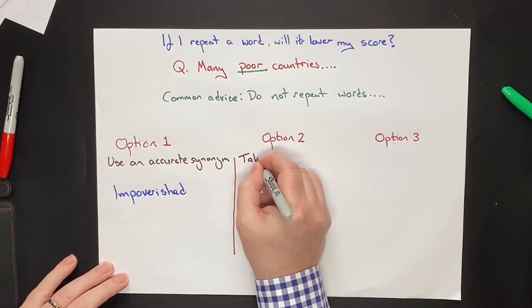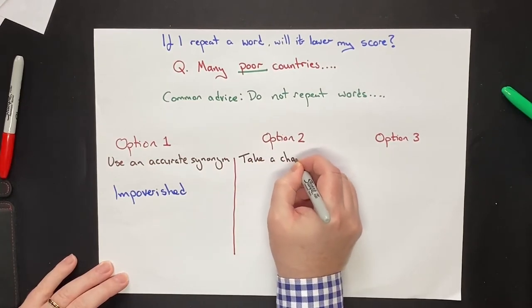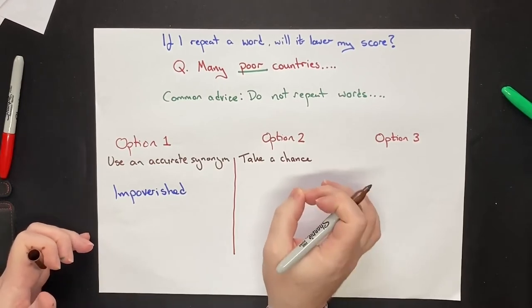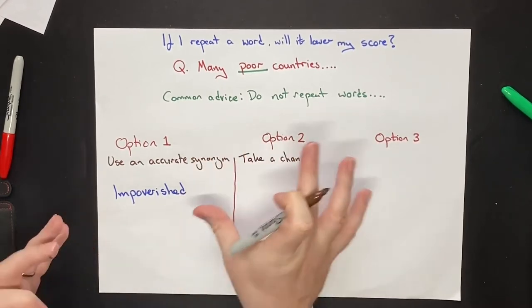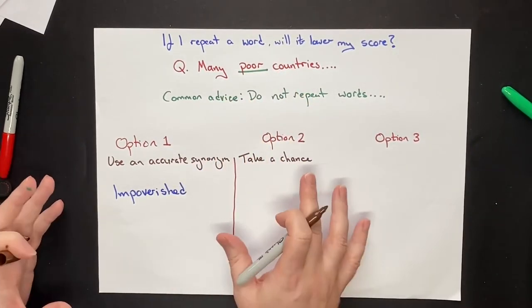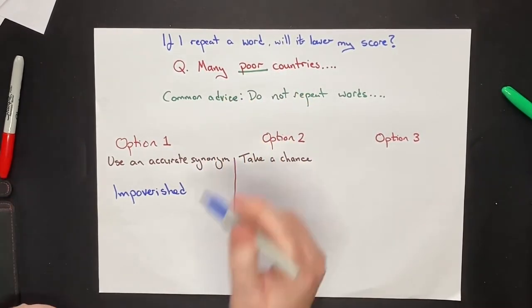Option two is to take a chance. What does take a chance mean? It means to change it to something that you're not 100% sure if it is accurate, if it means the same thing, but you think that it might be correct.